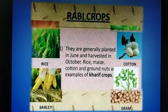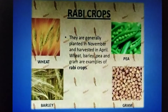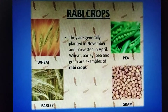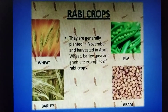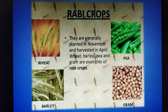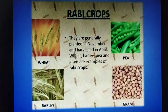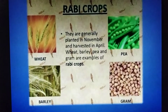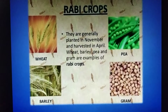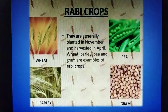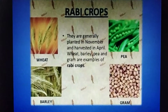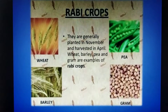Rabi crops are grown in the winter season. Their time period is generally from October to March. Examples of Rabi crops are wheat, gram, and peas.